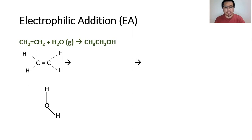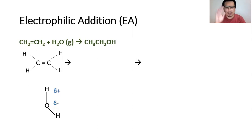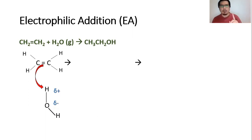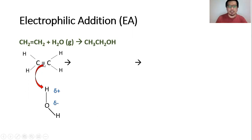Before we draw the mechanism, you need to assign the delta positive and delta negative — this is actually one mark in the examination, so make sure they are indicated. We start the mechanism by using the electrons from the pi bond to attack this particular hydrogen with the delta positive. Remember, these two electrons in the pi bond will be used to attack this particular hydrogen.